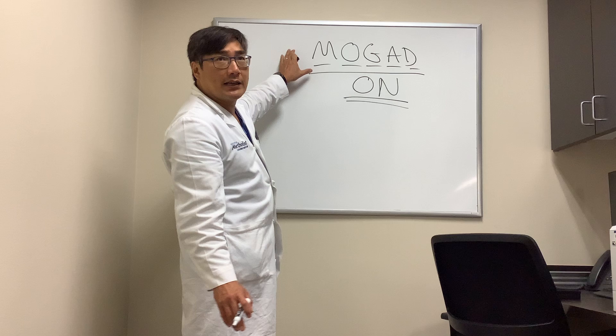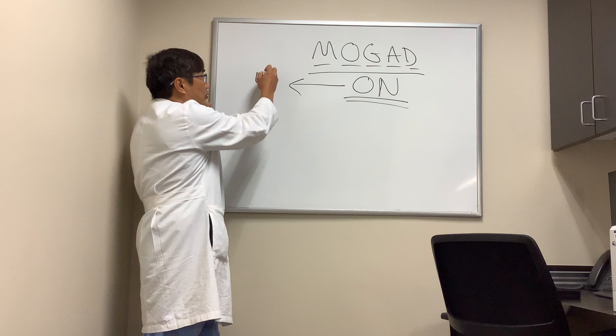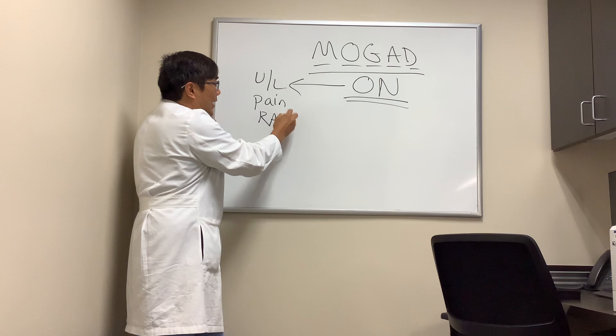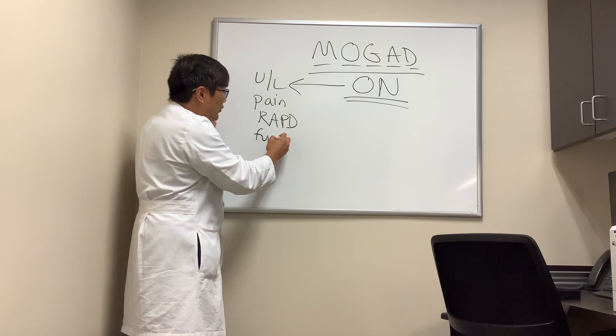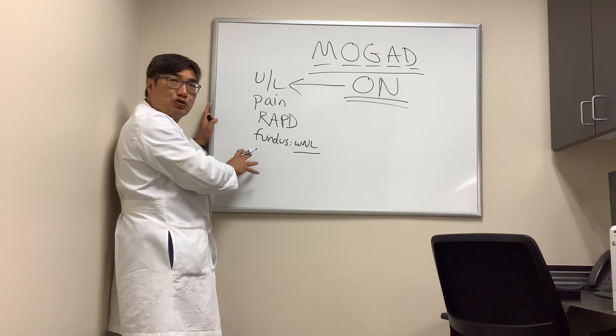Typical optic neuritis from multiple sclerosis is unilateral, there is pain with eye movement, and you're going to have an ipsilateral relative afferent pupillary defect, visual field loss, and visual acuity loss. The fundus is usually normal — the doctor sees nothing and the patient sees nothing — because this is a retrobulbar optic neuropathy.